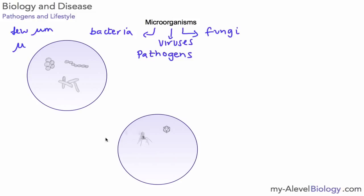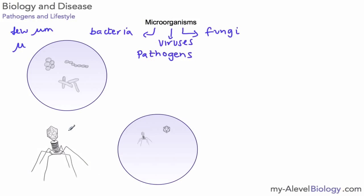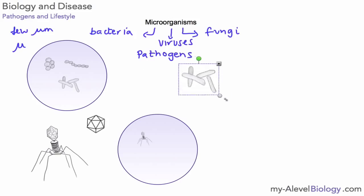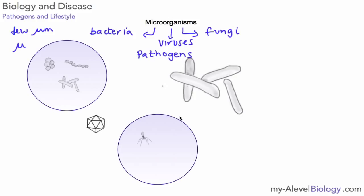Viruses are much smaller than bacteria. Here is an example of a type of virus called a bacteriophage — you can see it has quite an interesting shape, looking more like a spacecraft than something living. There is another one here that is quite regular in shape. If we compare a virus to rod-shaped bacteria in terms of size, we can see they are very, very tiny in comparison. That gives you a sense of the relative sizes of bacteria and viruses.